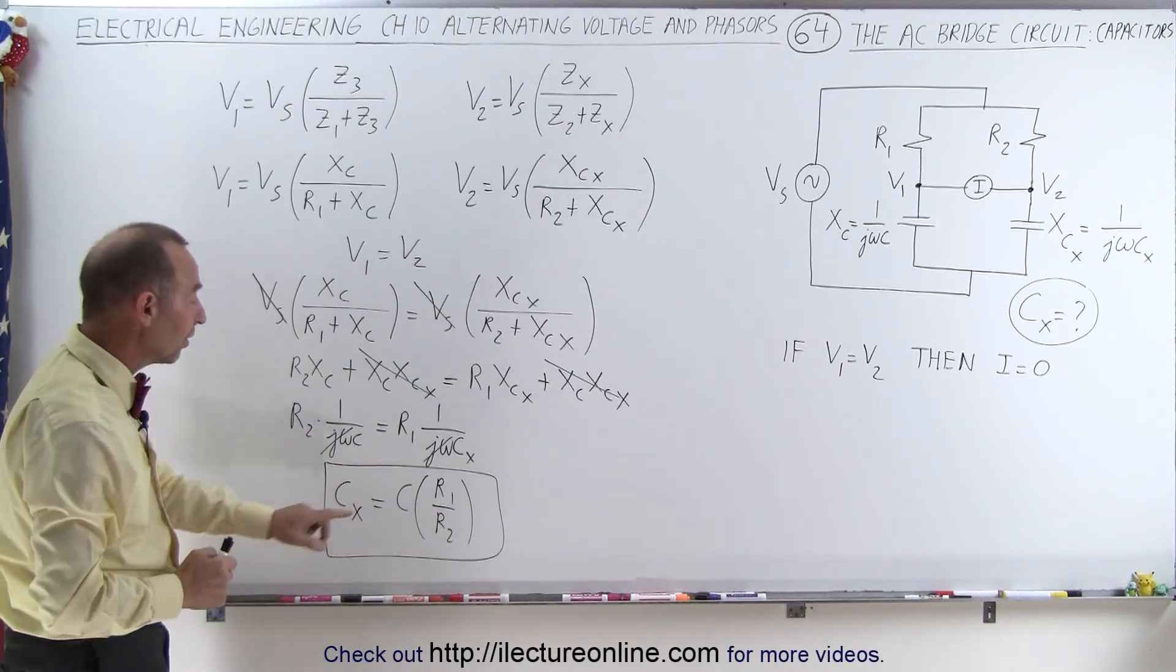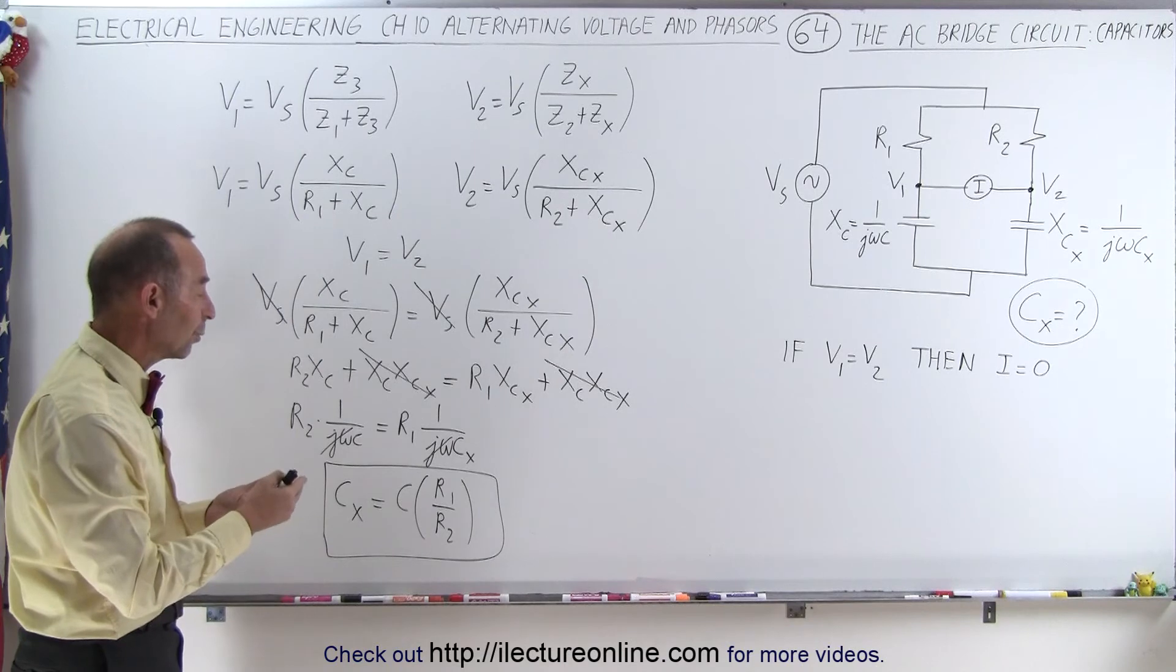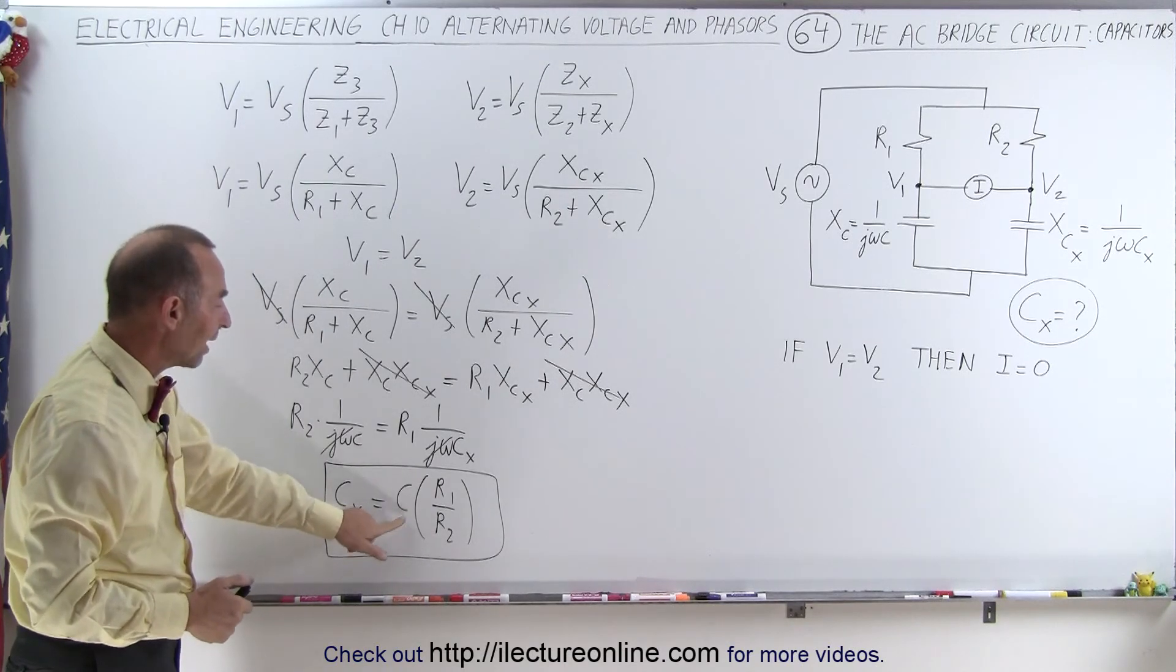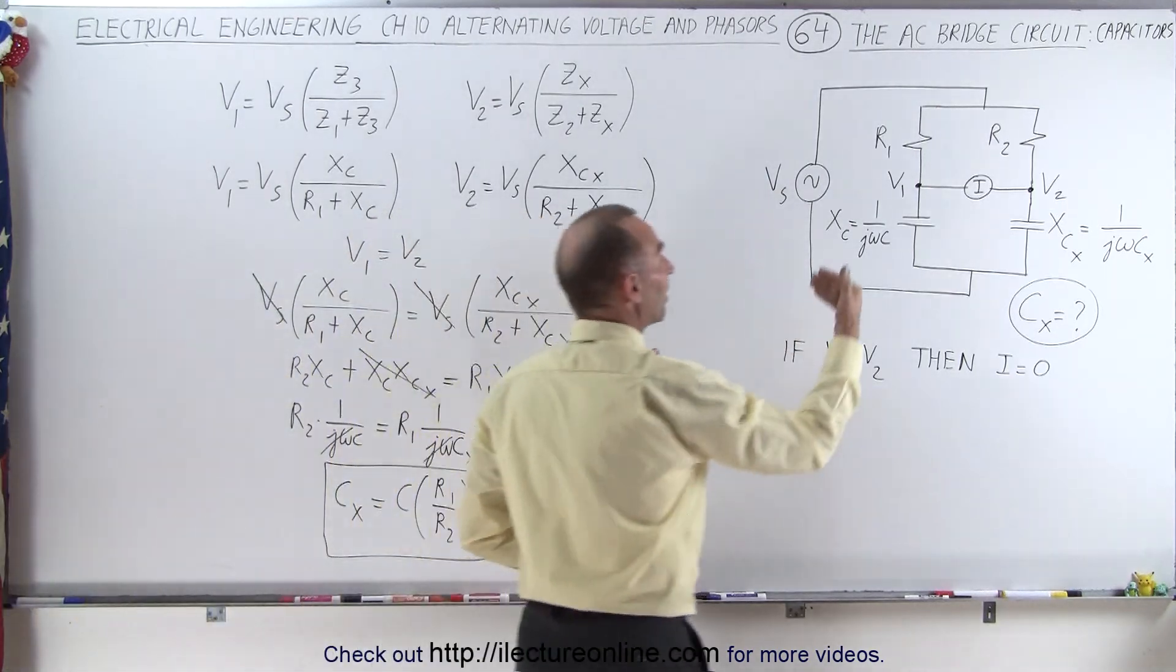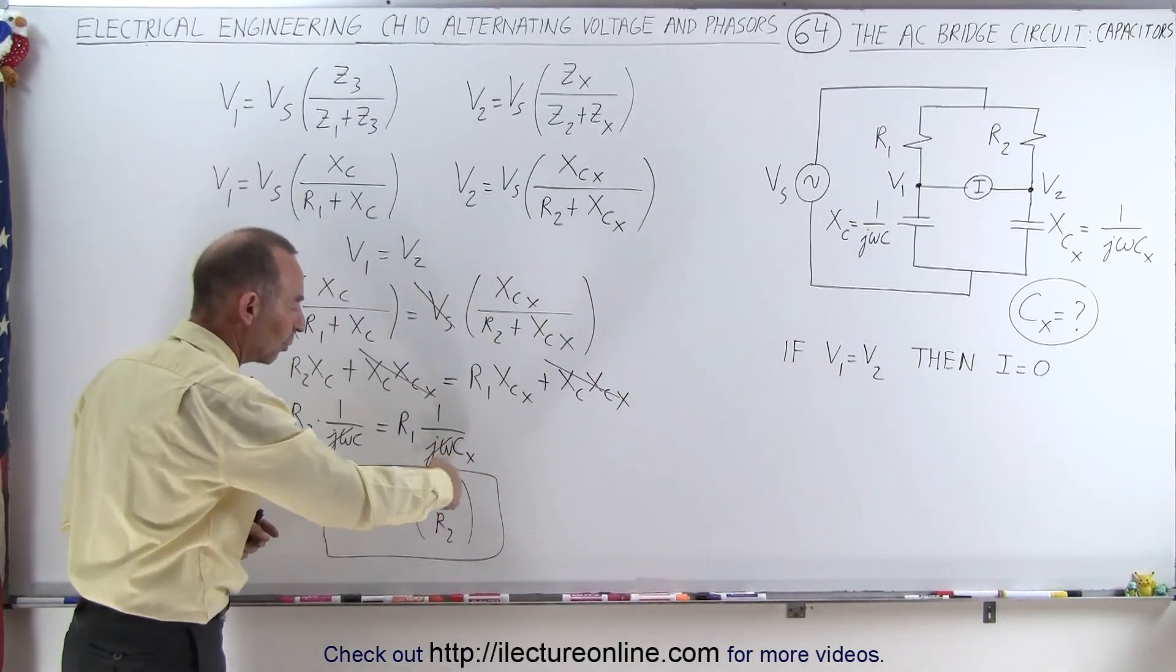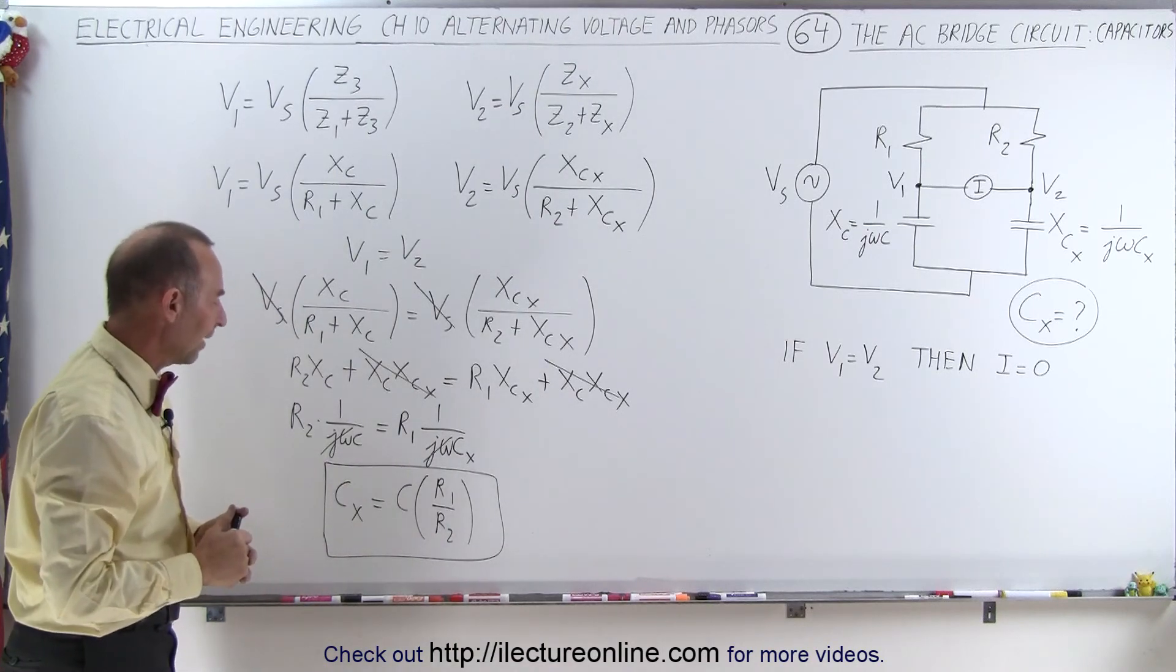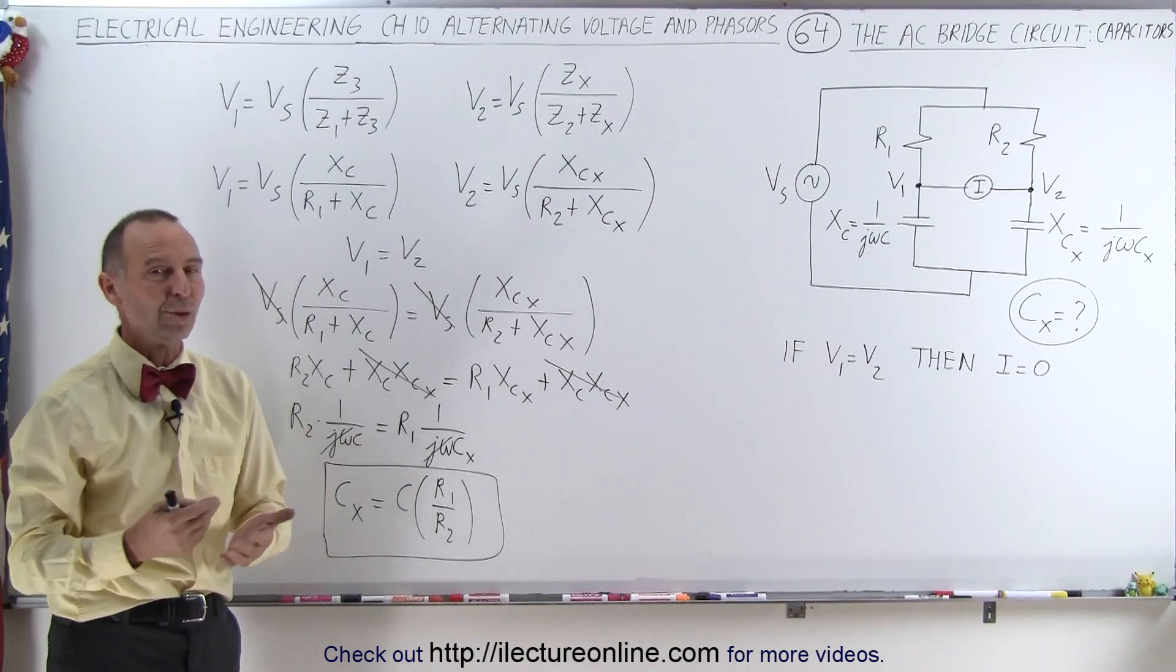You should also notice that R1 and R2 are now reversed, they're no longer what they were when we used inductors. With inductors, we have L sub x equals L times R2 over R1, but since the capacitor reactance is the inverse in 1 over J omega c, you notice that the result of that is that R1 and R2 will now be upside down, or will now have that inverse of that ratio compared to inductors. And so that's how we use the bridge circuit to find an unknown capacitor.